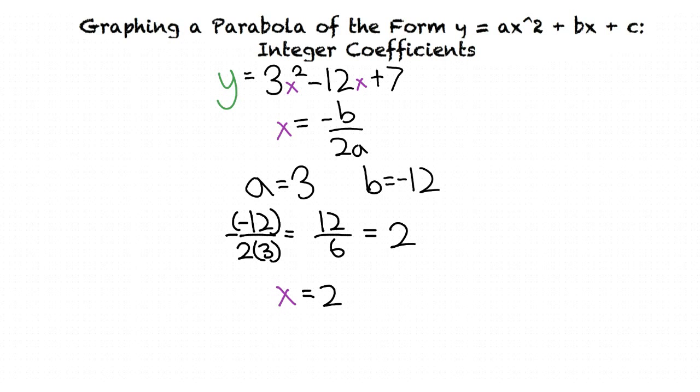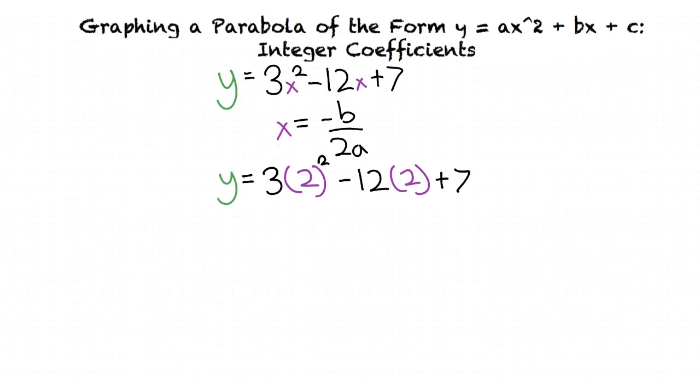Once we plug our values into the equation for the axis of symmetry, we get x equals 2. Since the vertex is located on the line x equals 2, its x coordinate will be 2. We then plug our x value back into our original function. This gets us the result of y equals negative 5. This also gets us our vertex of (2, negative 5).